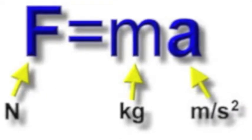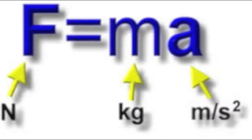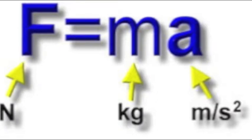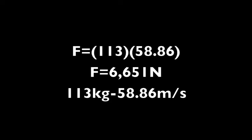Newton's second law states that the acceleration of an object produced by a force acts on a mass. So the greater the mass of the player, the greater force is produced. If Ray Lewis weighs 250 pounds or 113 kilograms and hits a player going 58.86 meters per second, he creates a force of 6,651 newtons.